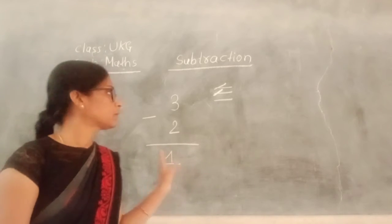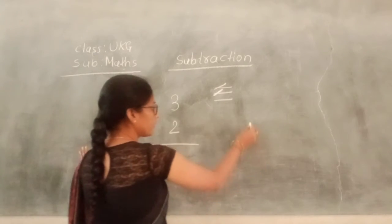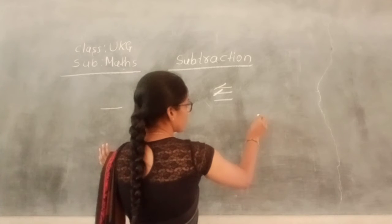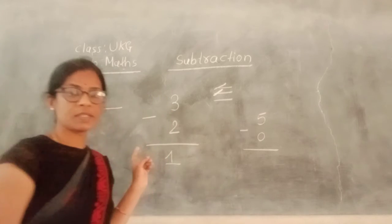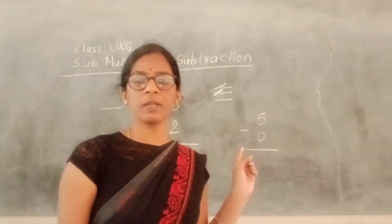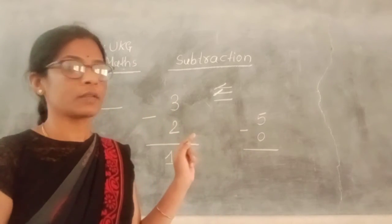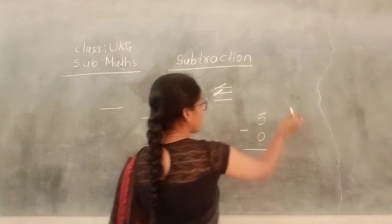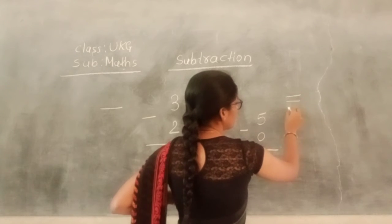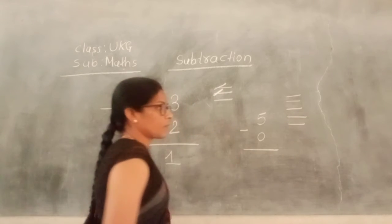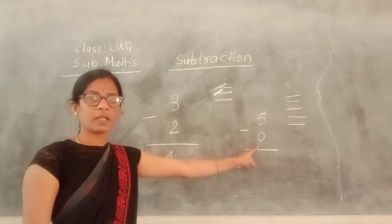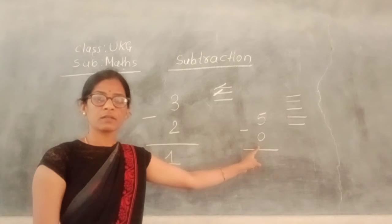Next, you can draw the three lines. Five minus zero. Look at here. What is the first number? Five. So I draw here five lines. One, two, three, four, five. And see the second number. What is the second number? Zero.